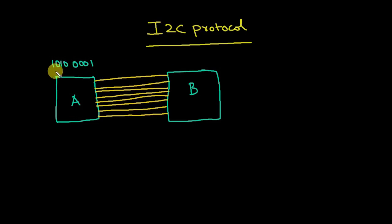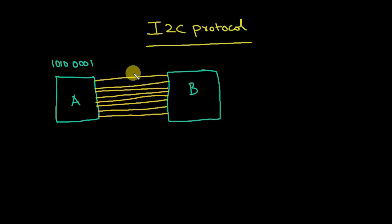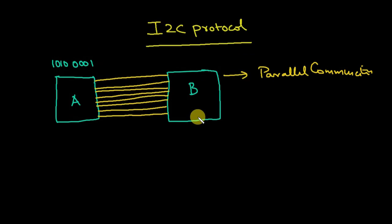Since there are eight bits, I can simply connect eight lines for transferring the data. For every specific bit there is a specific line. So if you transfer data like this, all the bits are transferred at a time — this is nothing but parallel communication. It is fast, but there are so many wires, which makes it bulky and requires more wires, meaning more cost. So then we came up with an idea called serial communication.